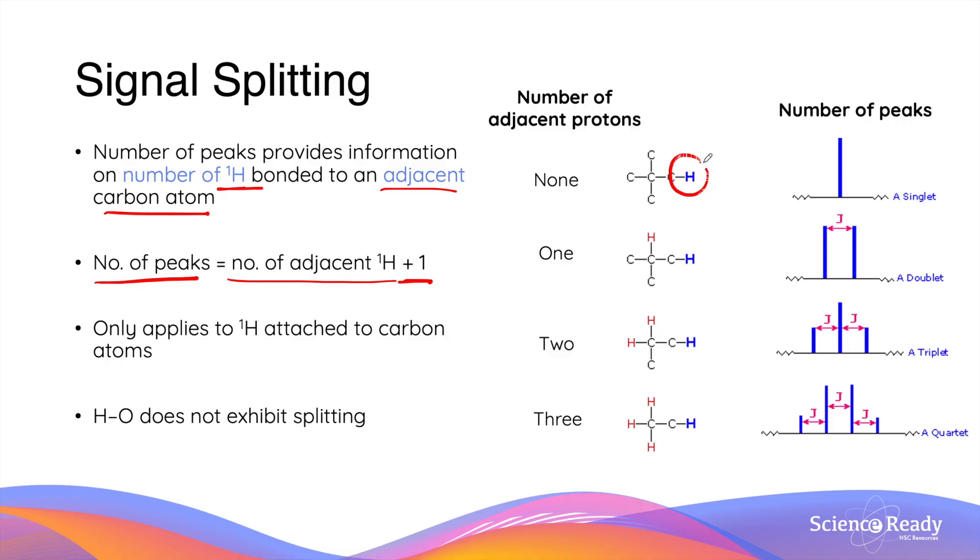For this specific proton, if there are no protons attached to the adjacent carbon atom, then it will produce a signal that does not exhibit any splitting. This is called a singlet.